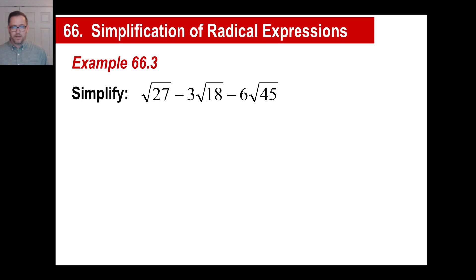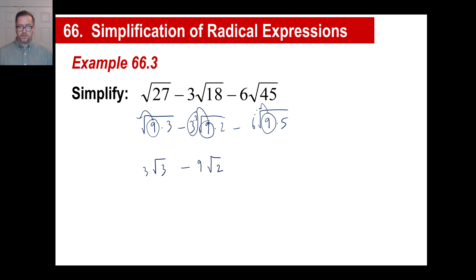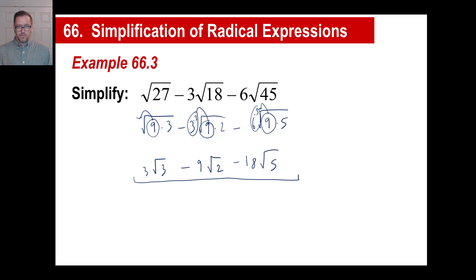Pause it and copy this one down. We recognize 27 as 9 times 3, and we've got that to pull out, minus the 3. Then 18: don't do 6 times 3 — that doesn't help. Do 9 times 2 — there's our square. Minus 6. And then 45 is 9 times 5. We've got 9s in all 3 of them. So 9 comes out: that becomes 3 square root of 3. The 9 here becomes 3, giving 9 square root of 2. And the 9 there gives 3, so 6 times 3 is 18 square root of 5. Now we have 3 terms and none of these are like terms — square root of 3, 2, and 5. You can't shove those together, so you just leave this with 3 terms.